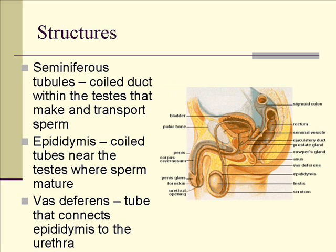Leading from the epididymis is a tube called the vas deferens, which connects the epididymis to the urethra. If you've ever heard of the term vasectomy, this is a surgical procedure that can be performed on males — it's a form of birth control that keeps a male from being able to impregnate a woman. A vasectomy involves cutting off the connection at the vas deferens, so the sperm cannot travel from the epididymis to the urethra.